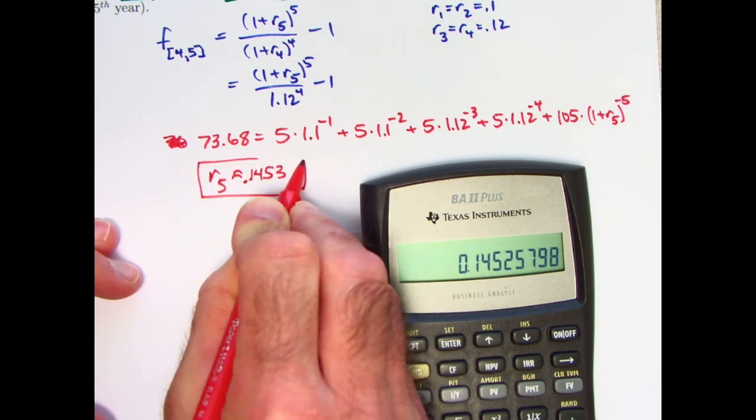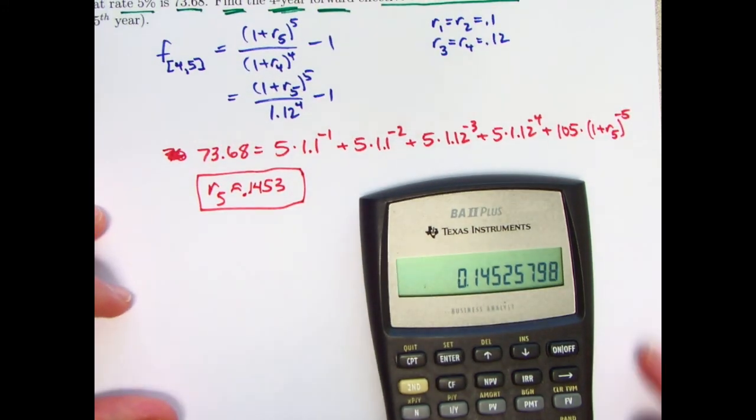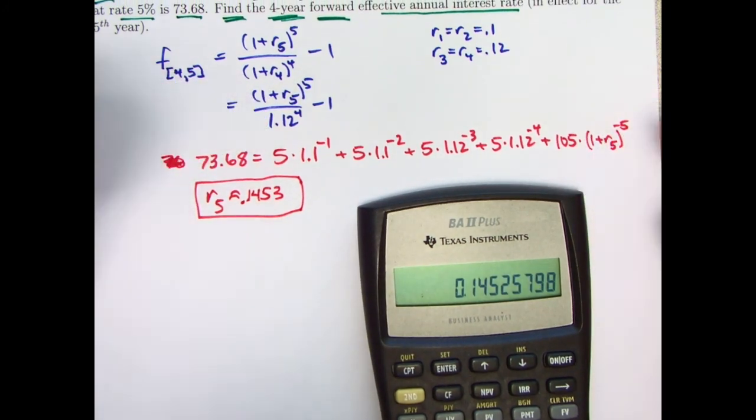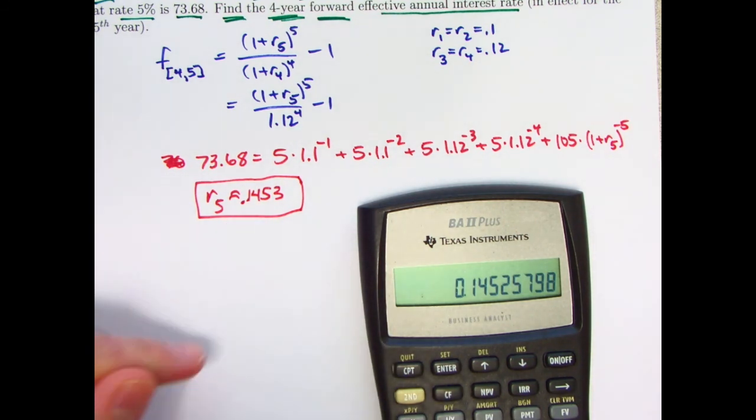And I will make the remark that in the back of the book for Broverman and in the answer key, they write 0.1452. And that's because they solve for R5 and they round it. So the rounding error gets compounded, so to speak. The true answer, if you use all the decimal places of accuracy, is actually 0.1453 instead of 0.1452. But, you know, it's pretty close, so you can see why that rounding error could cause it to be off a little bit at the end.